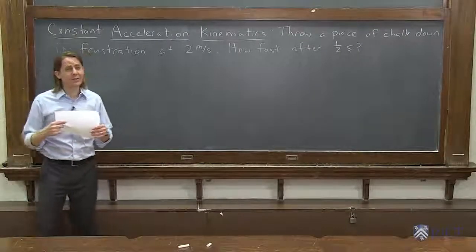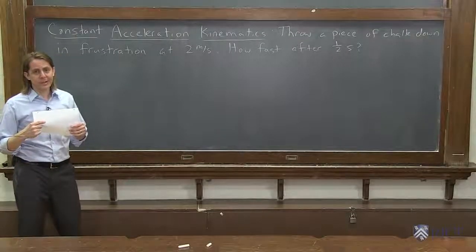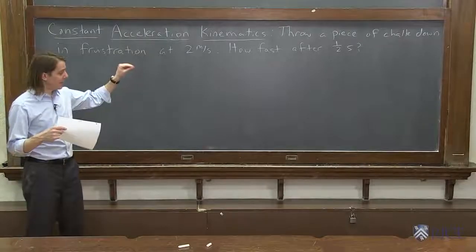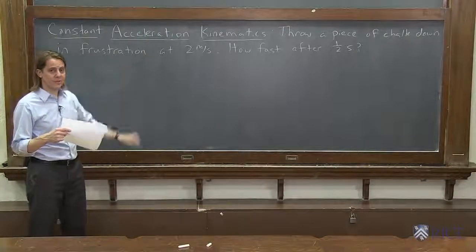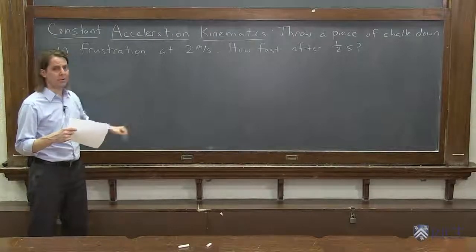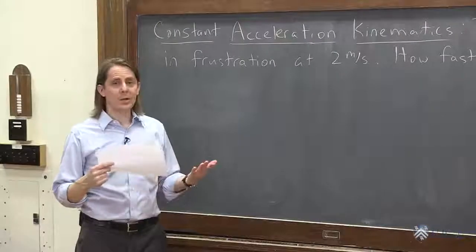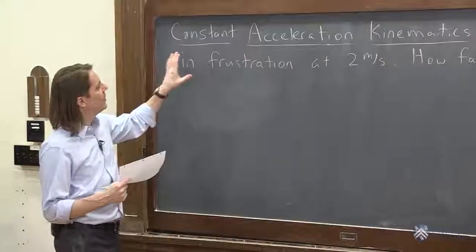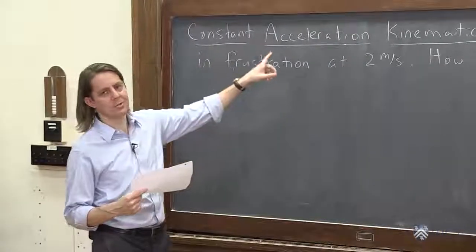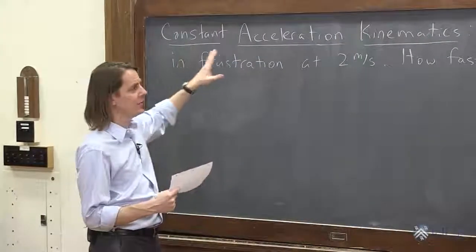So we have our definitions of instantaneous and average acceleration, and now we know that things fall at a uniform constant acceleration of 9.8 meters per second squared near the surface of the Earth. So we're ready to do some kinematics. We're going to do kinematics with the assumption of constant acceleration. Before it was constant velocity, now constant acceleration.